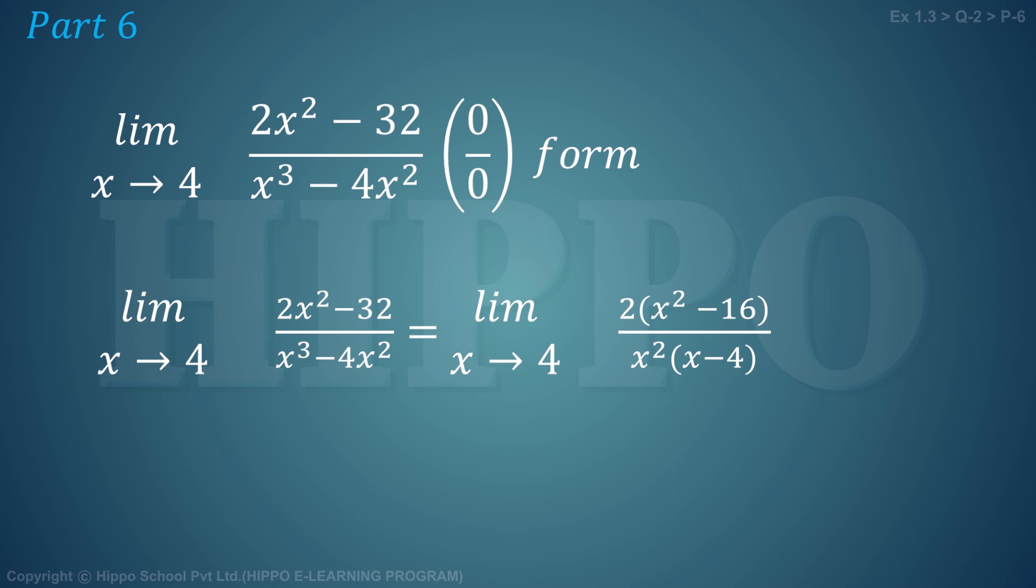Next step: we apply the formula a² - b² equals (a + b)(a - b). We can use this for x² - 16, writing it as (x + 4)(x - 4), so we have 2(x + 4)(x - 4) divided by x²(x - 4).